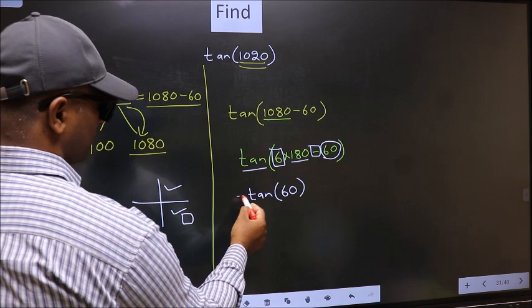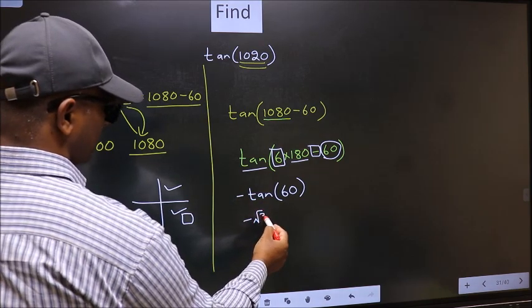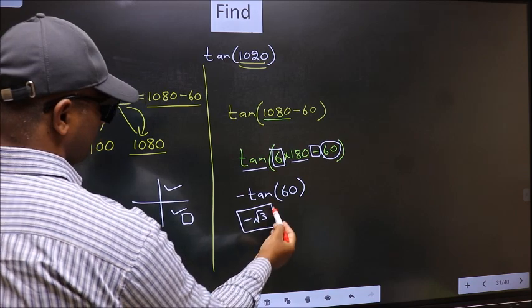So we should put negative. So negative tan 60 is root 3. This is our answer.